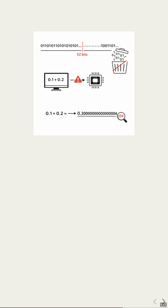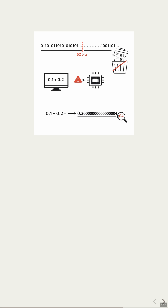So what does your computer actually do with this never-ending binary tale? Well, it just cuts it off after a fixed number of bits — about 52 — for a standard double precision number. That tiny chop introduces a tiny error, and when you add numbers, those errors can show up in surprising ways.